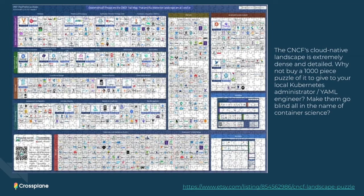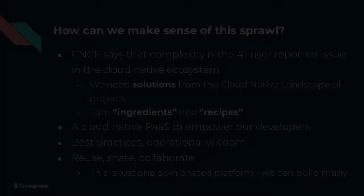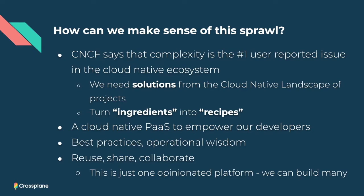There's a lot of stuff going on in this landscape. We saw what happened to old Charlie when he tried to make sense of it. So let's do a little bit better than Charlie did and start making some sense of all the sprawl. The CNCF itself says that complexity is the number one user-reported issue in the ecosystem, and it's been that way for a number of years. One way to help is to start composing these landscape entries together into higher-level solutions — turn these ingredients into recipes.